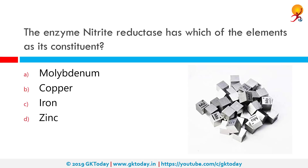The enzyme nitrite reductase has which of the following elements as its constituent? The correct answer is molybdenum. Assimilatory nitrate reductase is an enzyme of the assimilative metabolism involved in the reduction of nitrate to nitrite. The nitrite is immediately reduced to ammonia via hydroxylamine by the activity of nitrite reductase.